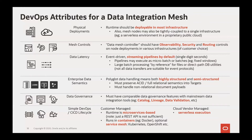This brings us to the DevOps attributes for data integration. From a physical deployment perspective, a data integration mesh should be deployable in most infrastructure. That doesn't mean you can't use proprietary vendor serverless environments — a mesh node could be tightly coupled to a serverless environment in a particular cloud vendor's ecosystem. The key is that even when running a workload in a tightly coupled serverless environment, you should still be able to maintain observability, routing, and security across the broader data lifecycle — seeing how that workload relates to other workloads running outside that serverless environment.